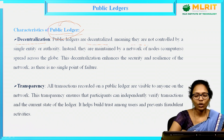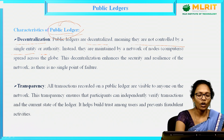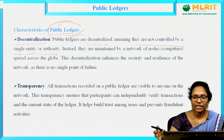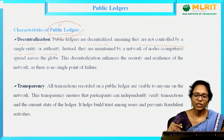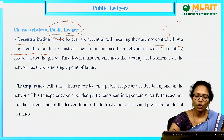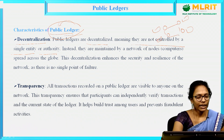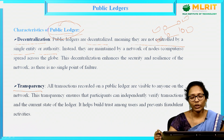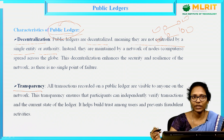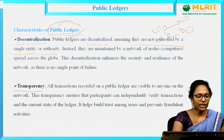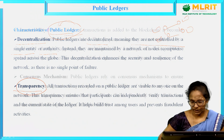Public ledgers are not controlled by a single entity or authority. Instead, the copy of this ledger is maintained at each and every node available in the network. Next is transparency — the transactions of this ledger are open. Anyone can access this and anyone can see the content, that is why it has a feature called transparency.